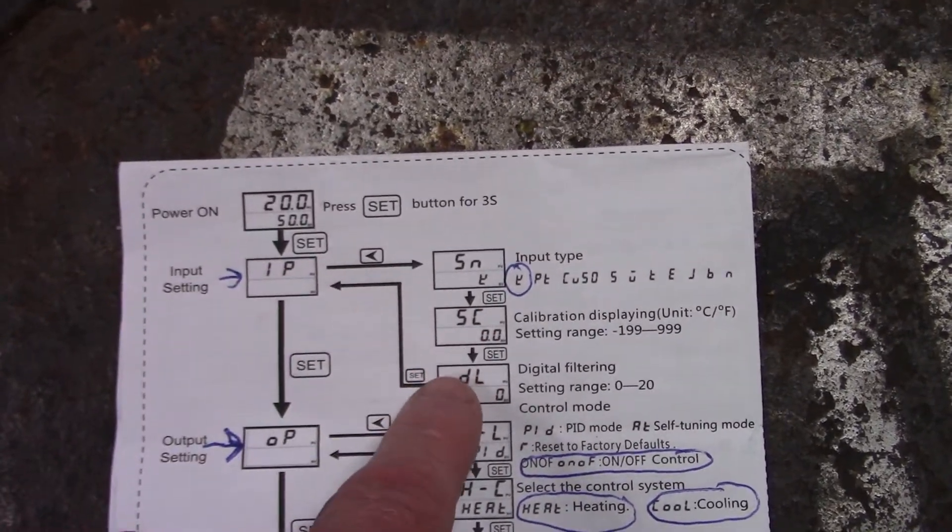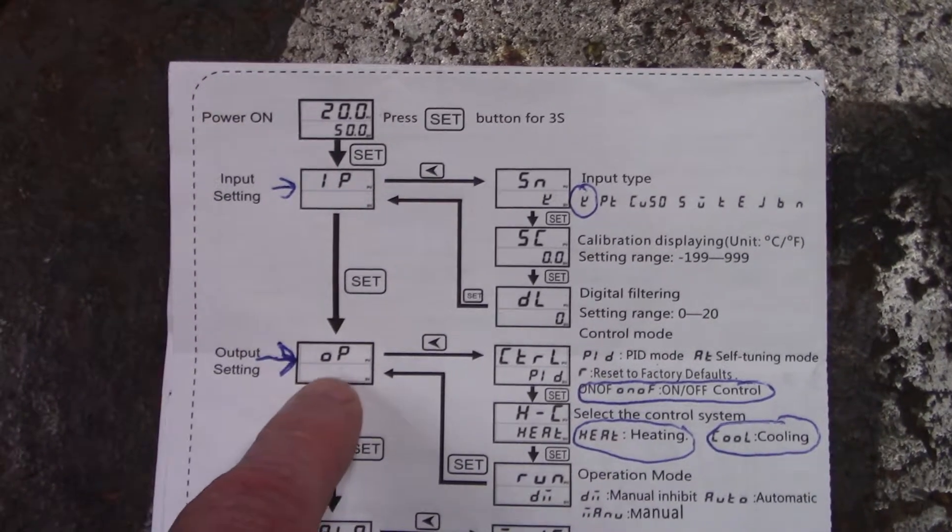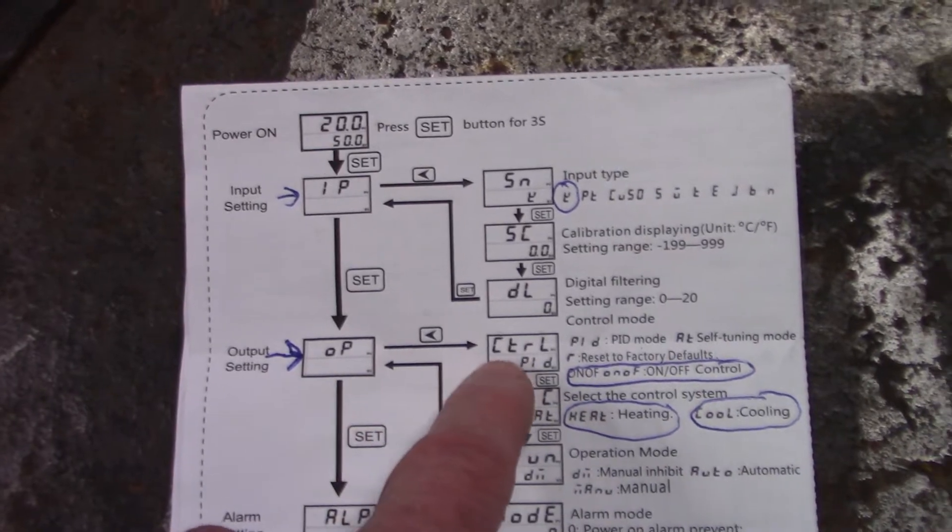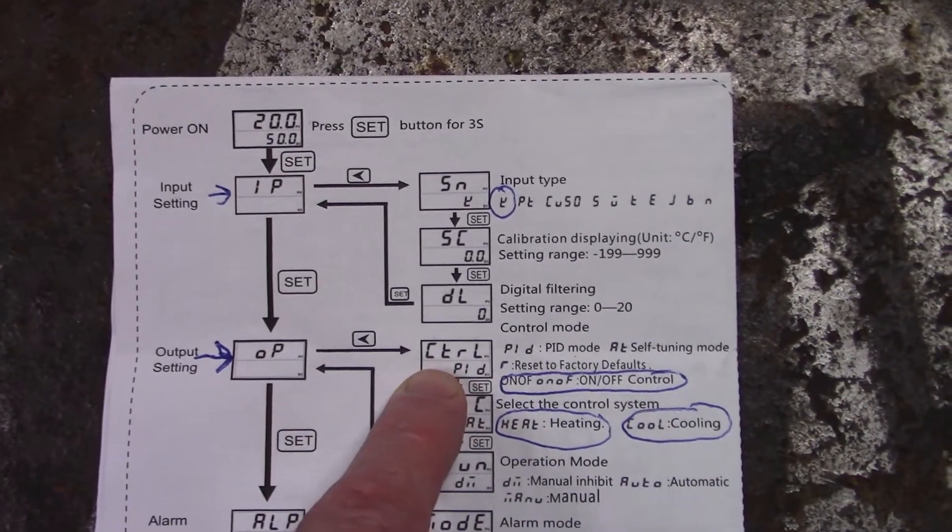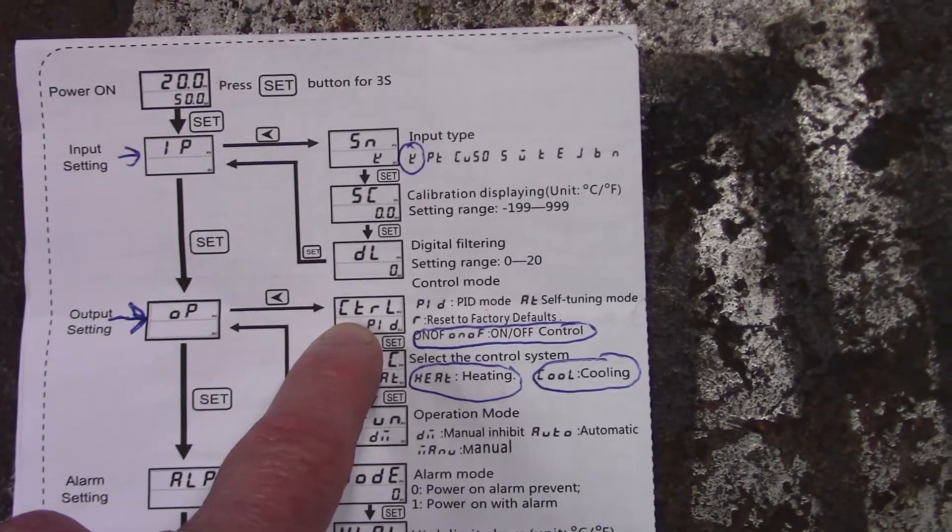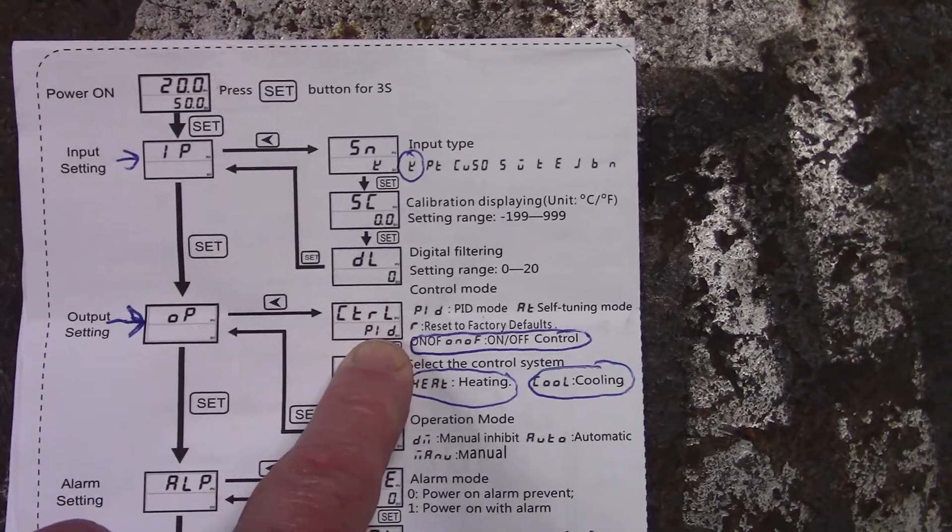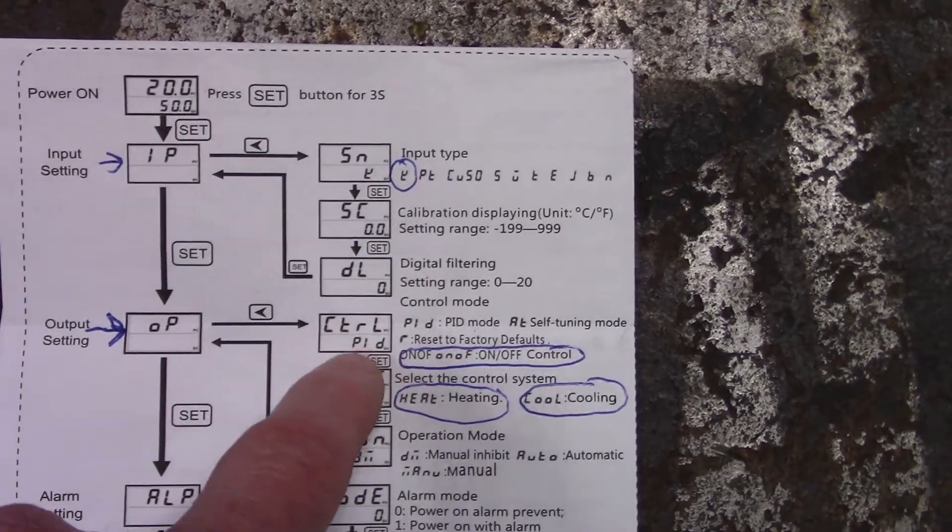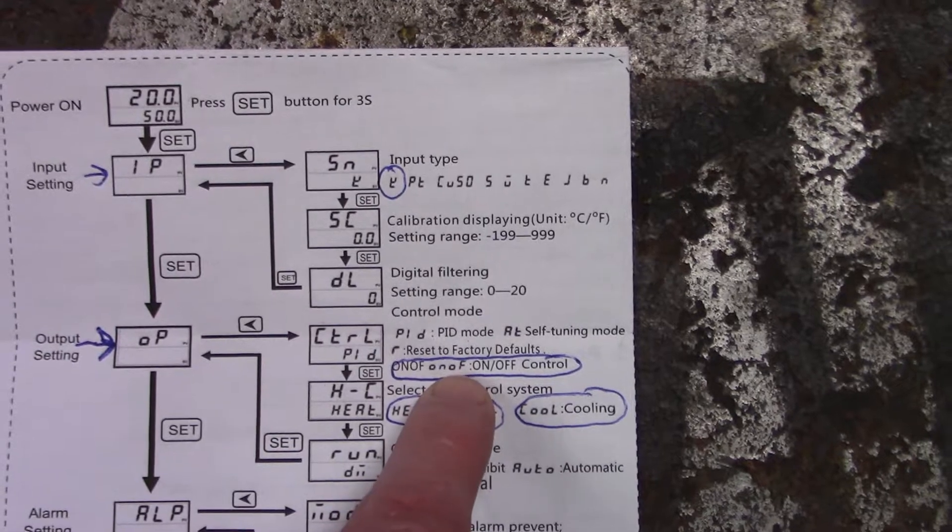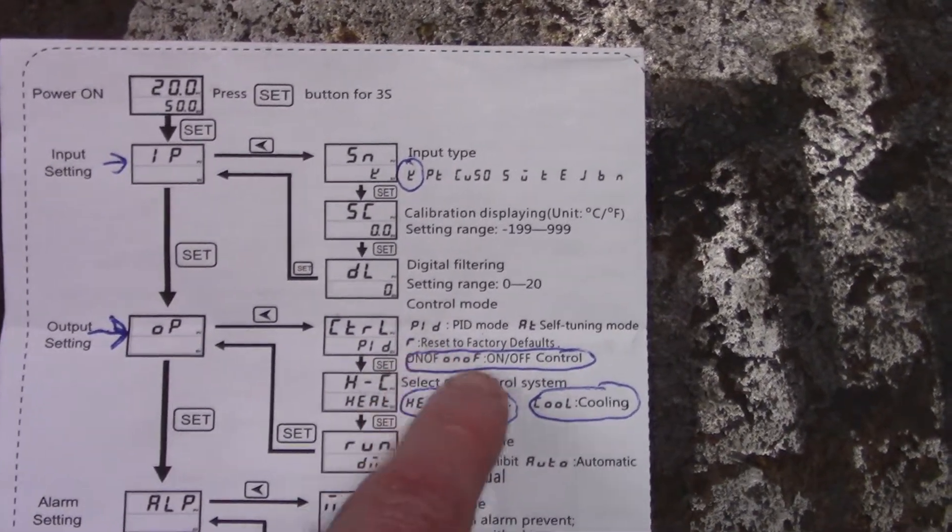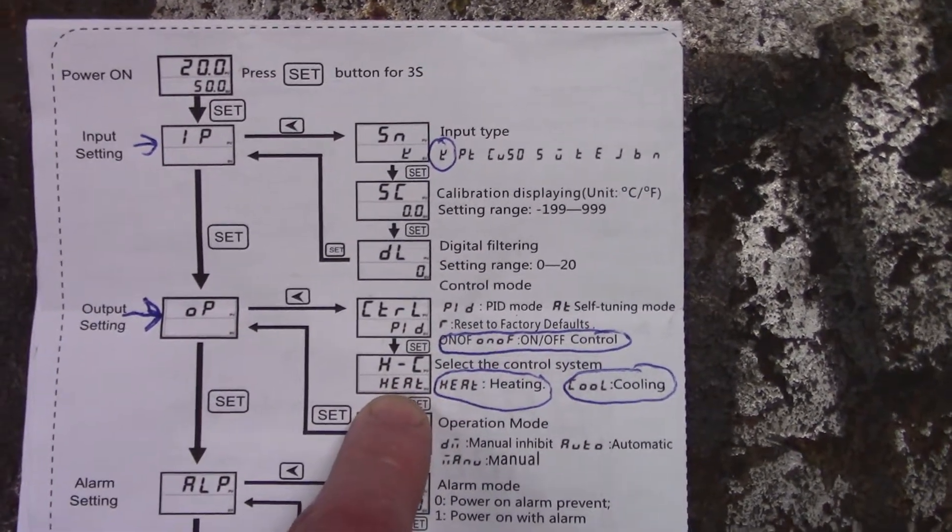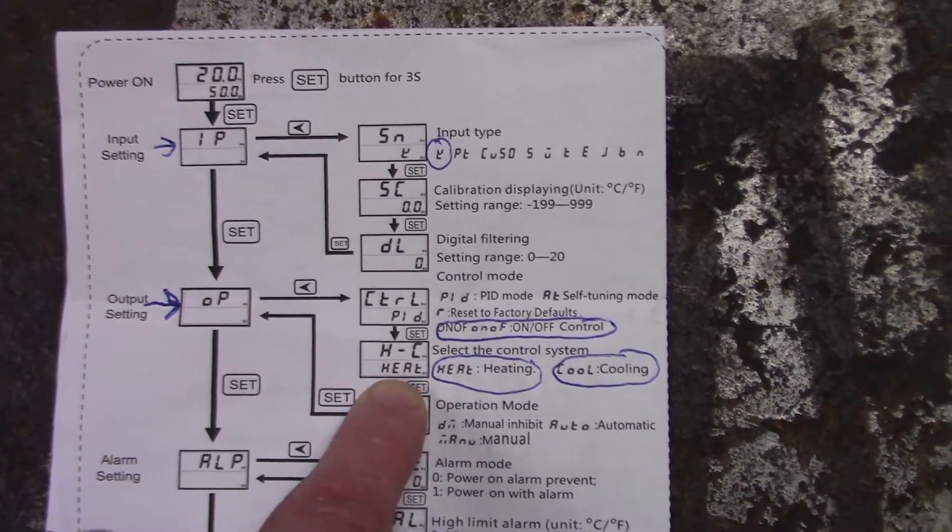Once you go through this menu it'll pop you back out here again and you'll go to the OP menu which is the output setting. For this control we're not going to use PID mode, it'll be set in PID mode from the factory, so you need to go into this menu and change it to on off.